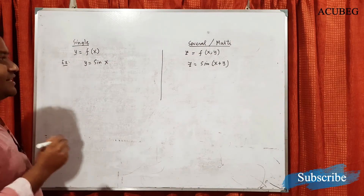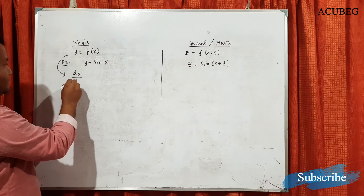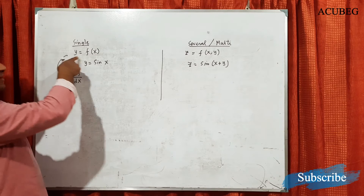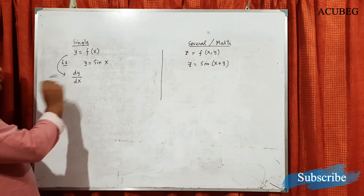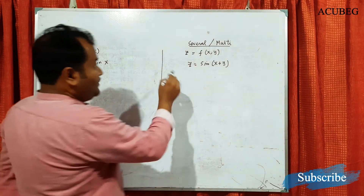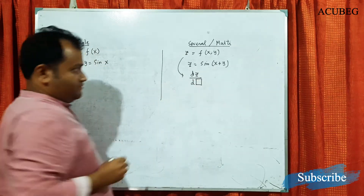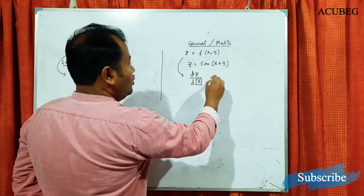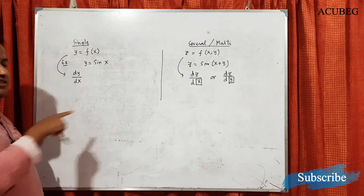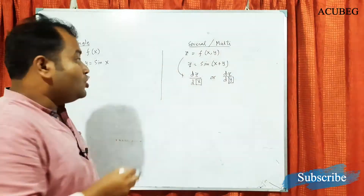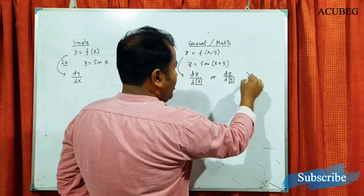The next difference comes with the derivative concept. If y = f(x), we can find dy/dx — y is the dependent variable and x is the independent variable, so we find the derivative of the dependent variable with respect to x. But if we try to find the derivative of z, we have two options: either with respect to x or with respect to y.